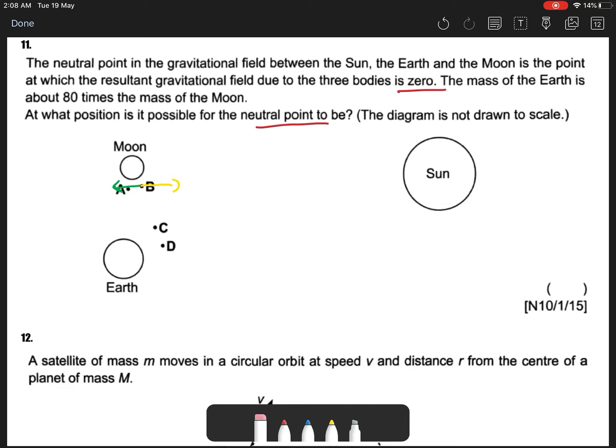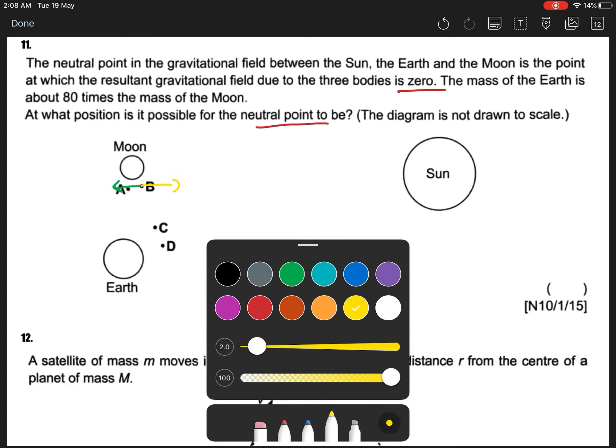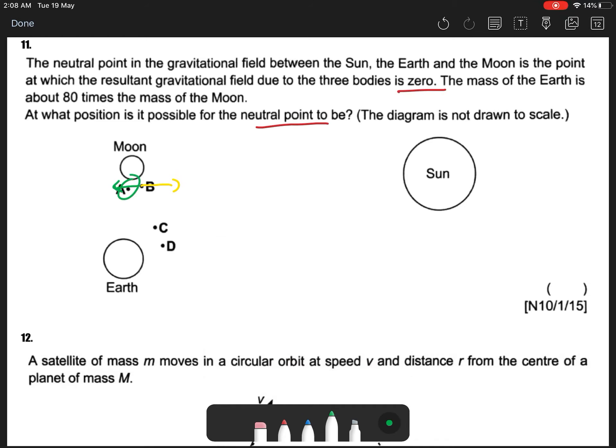The fields can cancel. Green is the resultant field. Green is the resultant field due to my moon added to my earth. So the answer is B.